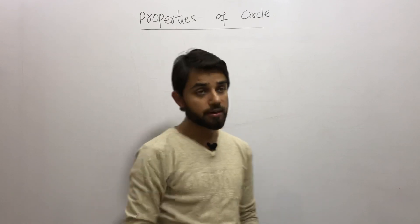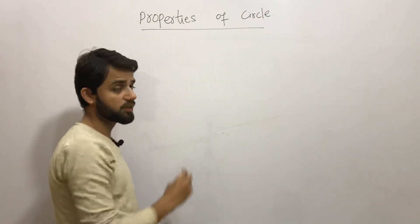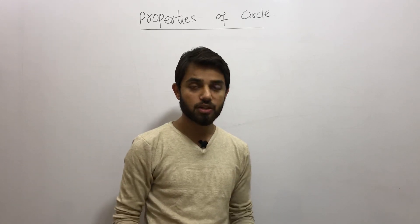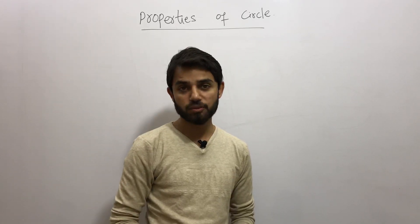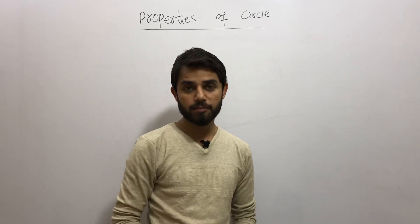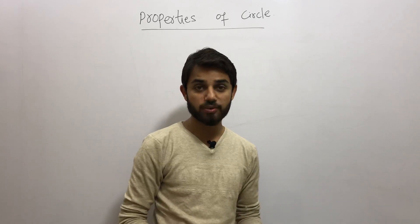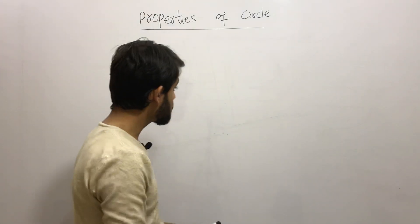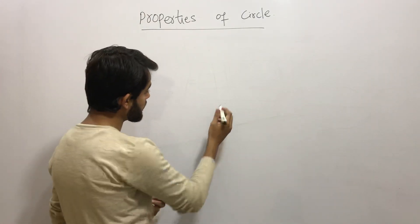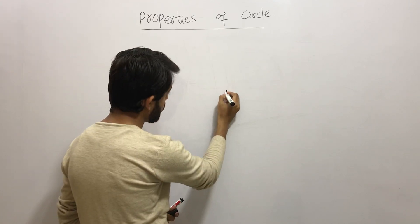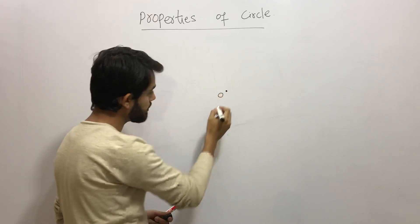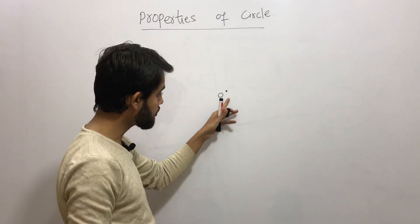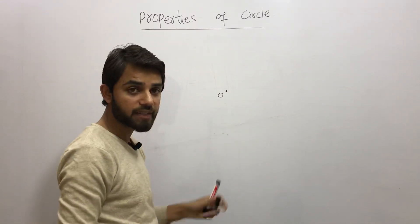In order to understand the properties of a circle, it is very important for you to know what a circle actually is, because if you don't know the answer to this question it will be very difficult to understand its properties. So I am taking a random point on this plane and naming it as O.